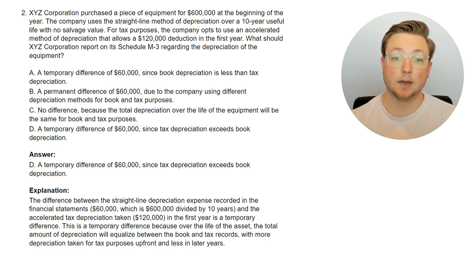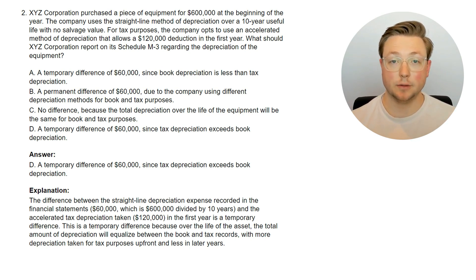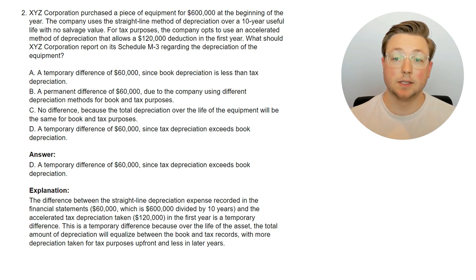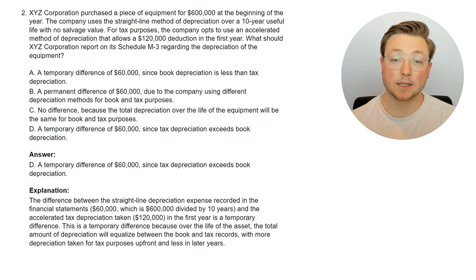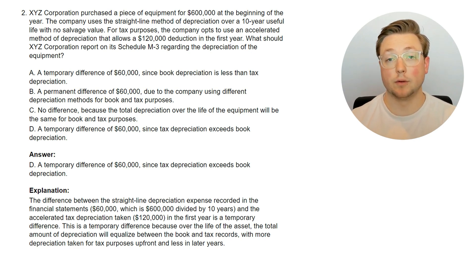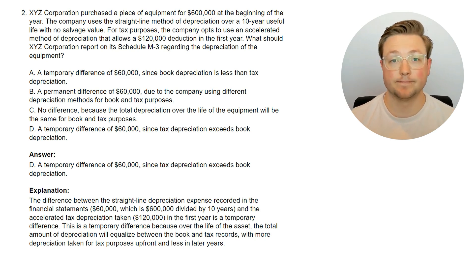It's temporary because in the end, the full depreciation will eventually be taken. In this case, since $60,000 was on book but $120,000 was on tax, that's why there's that $60,000 temporary difference where there was more depreciation on the tax return than on the book. Let's go ahead and go to the next question.